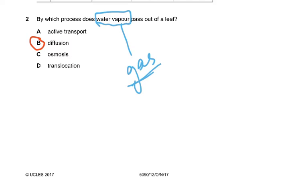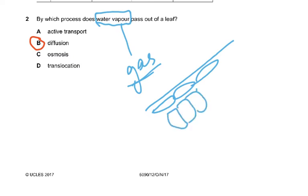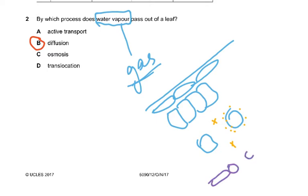Water vapor passes out of the leaf. The leaf has the cuticle, upper epidermis, palisade mesophyll, and spongy mesophyll. The water evaporates — it's a film of water around the spongy cells — then it moves out through the lower epidermis via the guard cells. So water vapors are going to diffuse out.